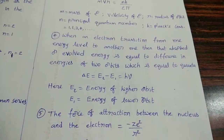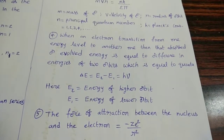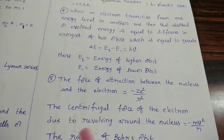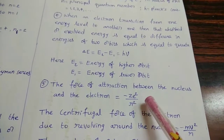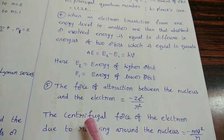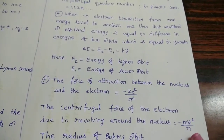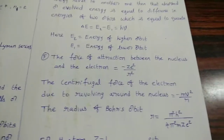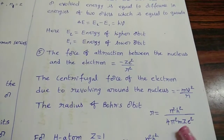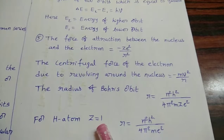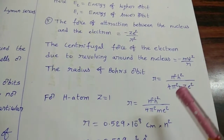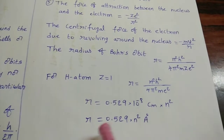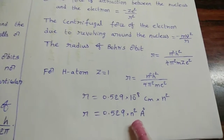The force of attraction between the nucleus and electron — since they have opposite charges — is -Ze²/r². The centrifugal force due to the electron revolving around the nucleus acts in the opposite direction, with expression mv²/r. These two forces are equal in magnitude but operate in opposite directions. The radius of Bohr's orbit is r = n²h²/(4π²mZe²). For hydrogen, Z = 1, so substituting the values of n, h, π, m, e, we get r = 0.529 × 10⁻⁸ cm × n², or in angstrom units: r = 0.529n² Å, where n is the orbit number.